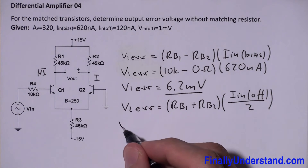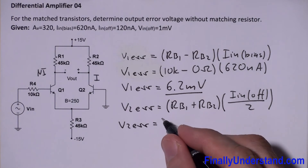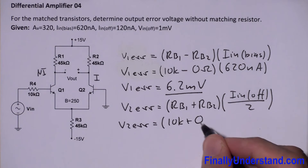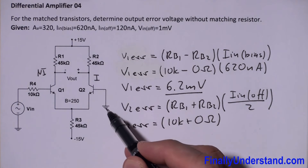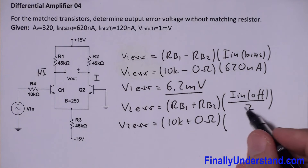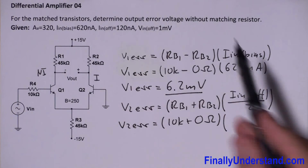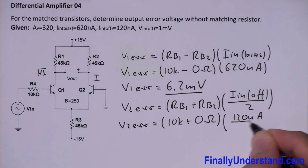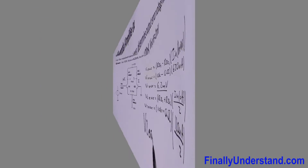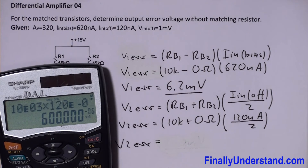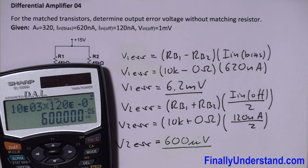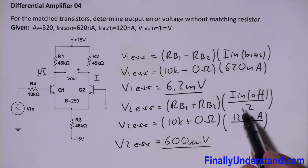V2_error = (Rb1 + Rb2) × Ios / 2 = (10 kΩ + 0 Ω) × 120 nA / 2, because the base of transistor Q2 is connected directly to ground, giving Rb2 = 0. So V2_error = (10×10³ × 120×10⁻⁹) / 2 = 600 µV. This is the input error voltage due to input offset current.